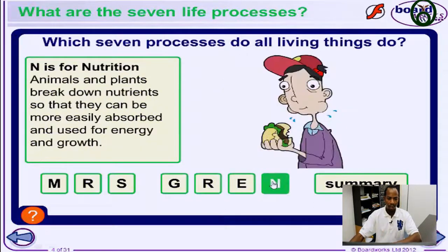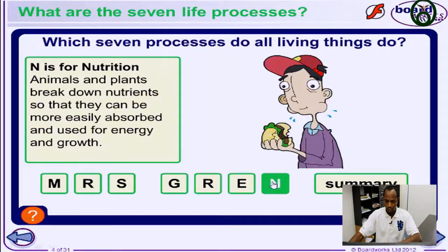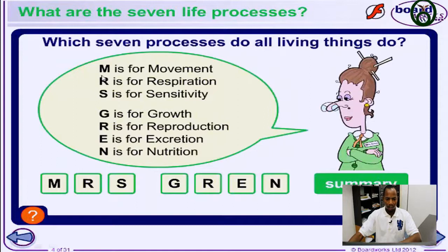Then, nutrition — all living things require nutrients that are absorbed and used in the body in the form of energy. In summary, we represent these several life processes as MRS GRAIN.